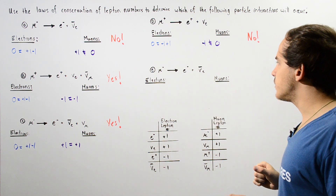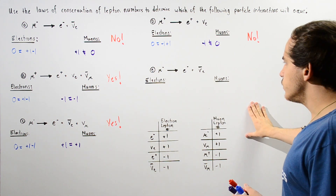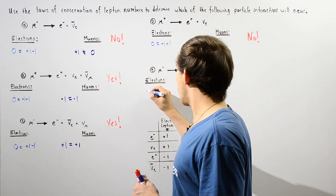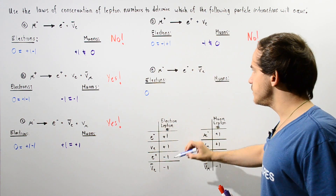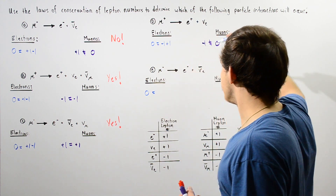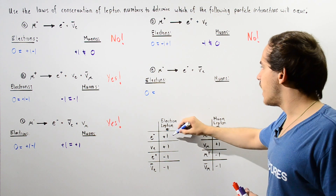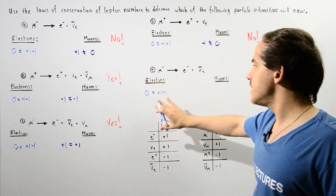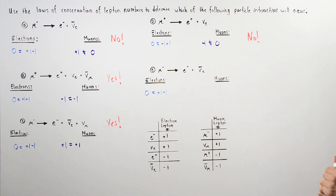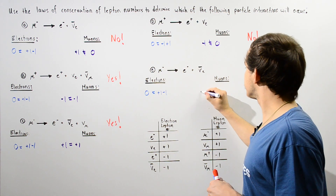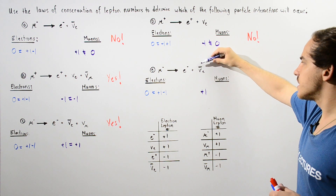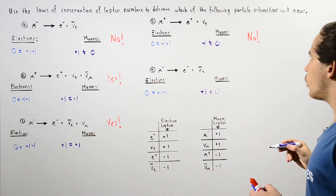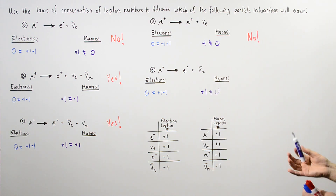Finally, let's examine the last reaction. For the electron lepton number, the left side gives zero since we have none of these particles. On the right side, we have an electron which gets positive one and an electron anti-neutrino which gets negative one, so this works. For the muon lepton number, on the left side we have positive one, but on the right side we have none of the relevant leptons, giving zero. Since positive one does not equal zero, this reaction does not readily take place.